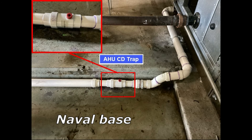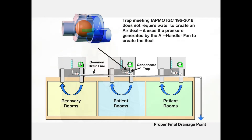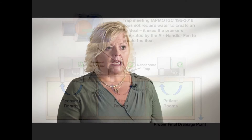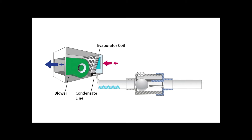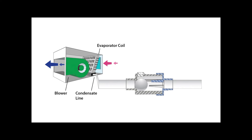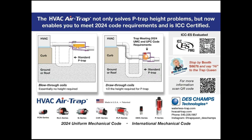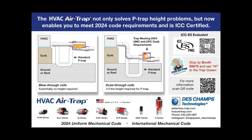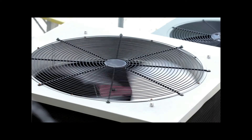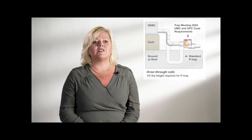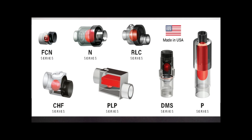The HVAC air trap prevents air from exiting or entering HVAC equipment — we use the air pressure from the equipment to maintain the seal. With a negative pressure system, what we would call a draw-through, the fan is drawing air through the coil. The formula for a standard P-trap is two times the plenum pressure plus one. So if your unit has two inches of pressure, your standard P-trap is going to be five to six inches. With our product, we only need the plenum pressure, so that formula is split in half.